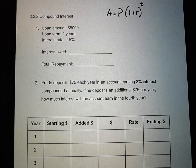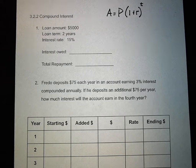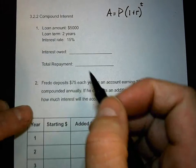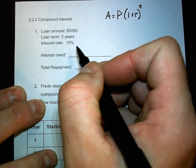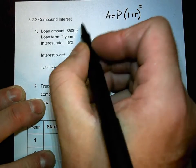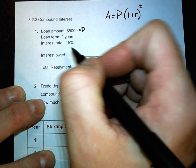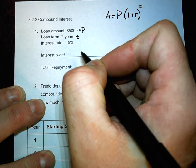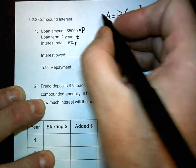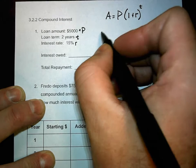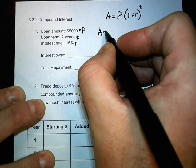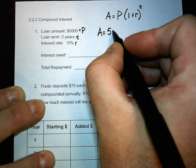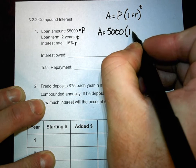Pretty good loan — that'll pay for your college if you go to a decent school and work hard. So the loan amount is five thousand dollars — that's our P. The two years is our T. The interest rate is our R. We don't know A — that's what we're looking for. P is five thousand, times one plus R.